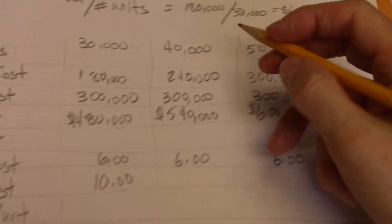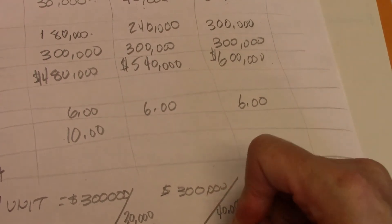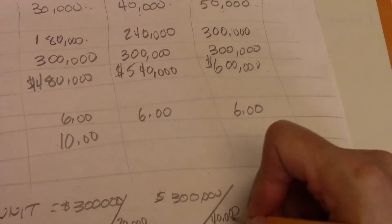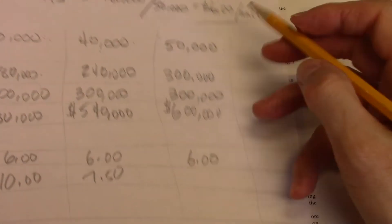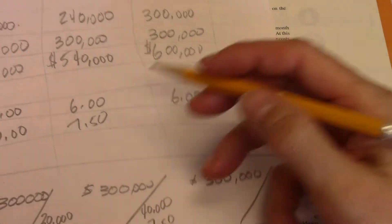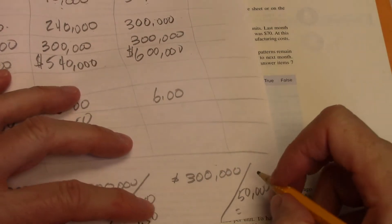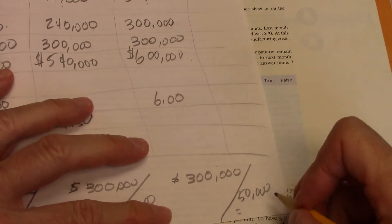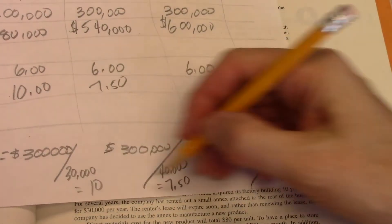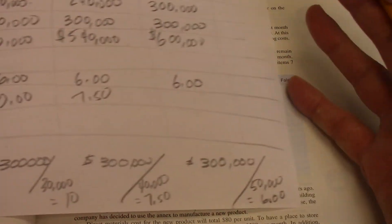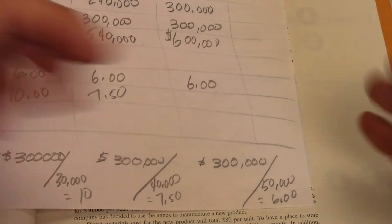Under 40,000, I take 300,000, I divide it by 40,000, and I get $7.50 per unit. Under 50,000, I take 300,000, divide it by 50,000, and I get $6 per unit. So you see how it's getting smaller. The more units I produce, the lower my per unit fixed cost gets.